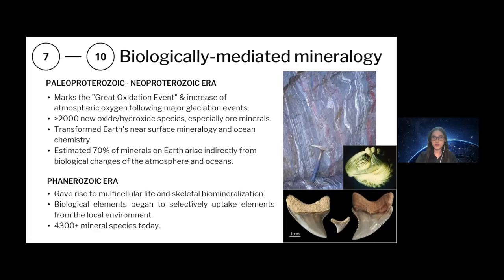By the beginning of the Phanerozoic Eon, biological elements began to selectively uptake elements from the local environment and incorporate them into functional structures under strict biological control. Consequently, Earth's mineral diversity increased again, and the early Cambrian saw a rise of all major skeletal minerals responsible for the formation of teeth, shells, and bones. Today, more than 4,300 mineral species have been classified, and the geochemical cycles of most elements are still affected by biology.